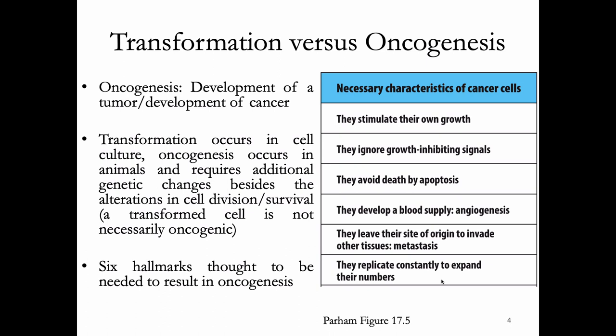Classically, we talk about the six hallmarks of cancer — six things that a cell has to be able to do in order to be oncogenic. One is that they have to be able to stimulate their own growth, sometimes making growth factors or cytokines to feed themselves. They ignore growth-inhibiting signals. They avoid death by apoptosis. They replicate constantly. But in order to make a tumor, these cells usually have to modify the environment around them to develop their own blood supply — angiogenesis — so the tumor can actually be fed with blood and nutrients. A transformed cell in a dish may not actually be able to do that.